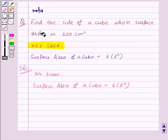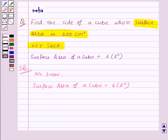And in question, we are given that the surface area of the cube is 600 cm². So we will replace surface area of a cube by 600. And this will be equal to 6 into L square.